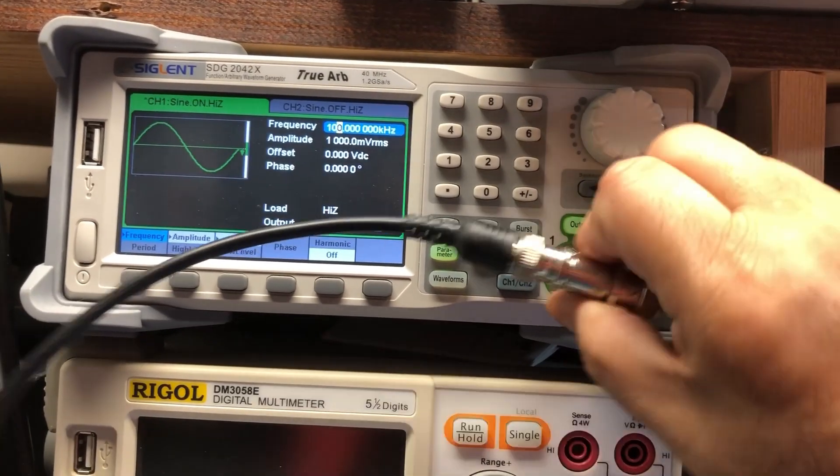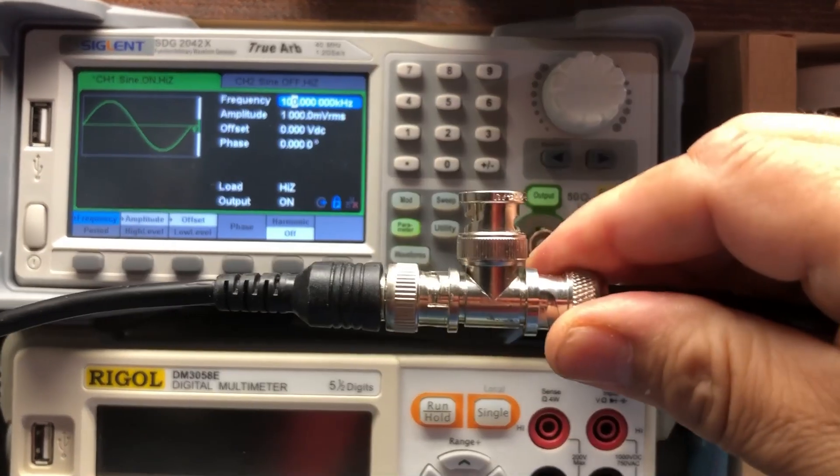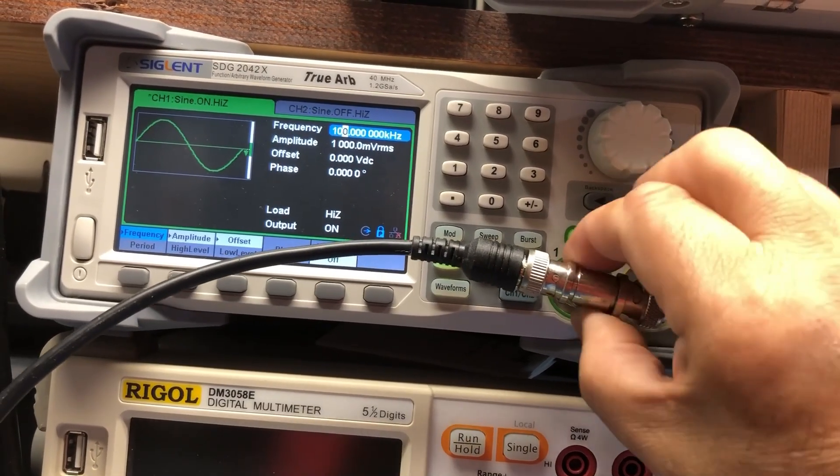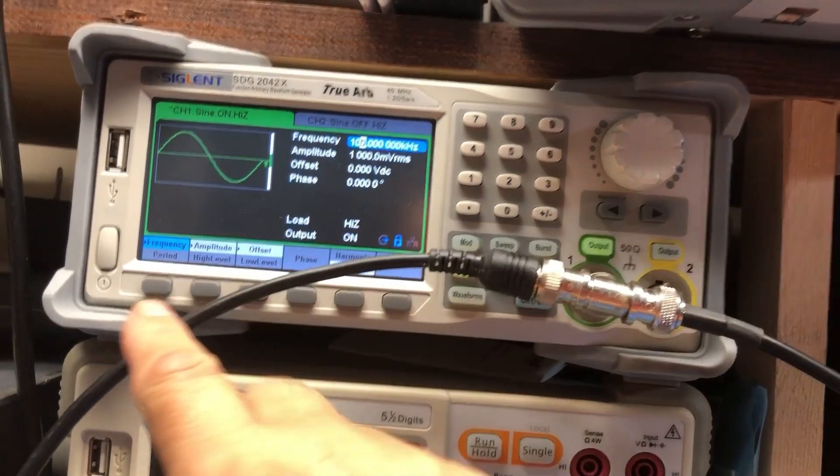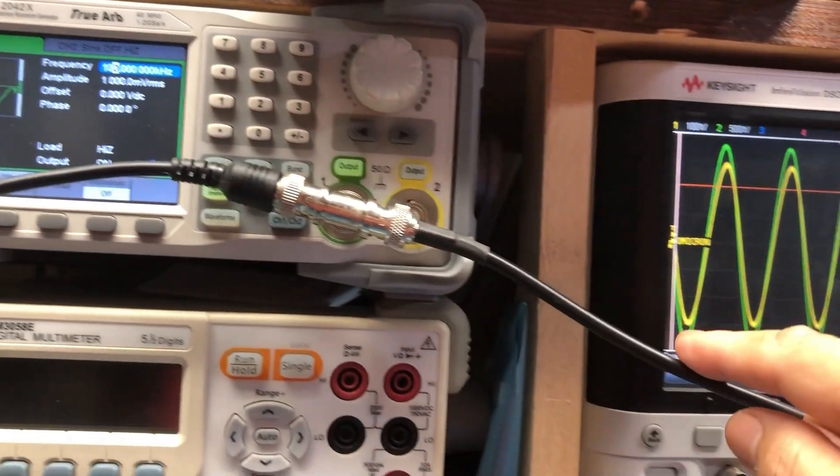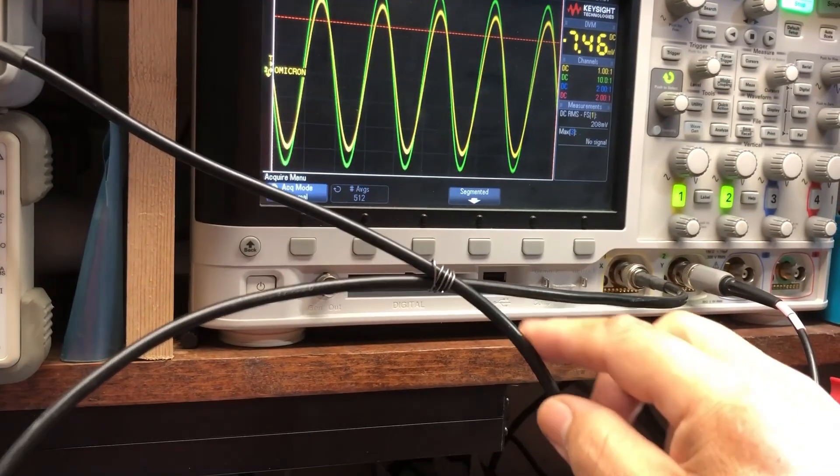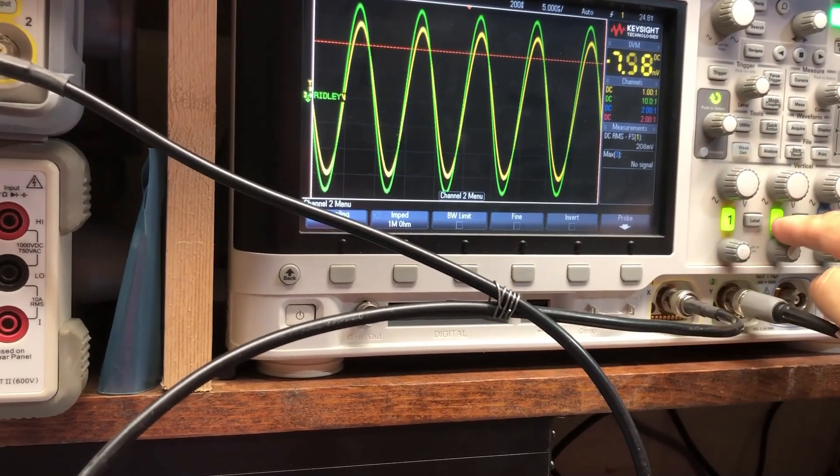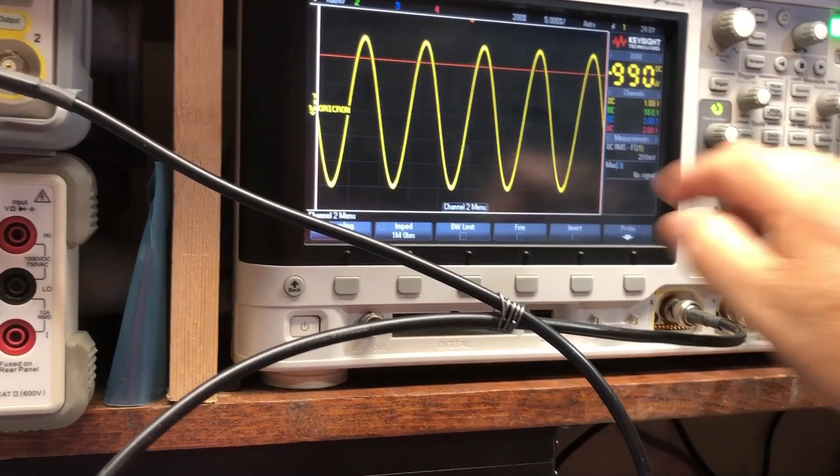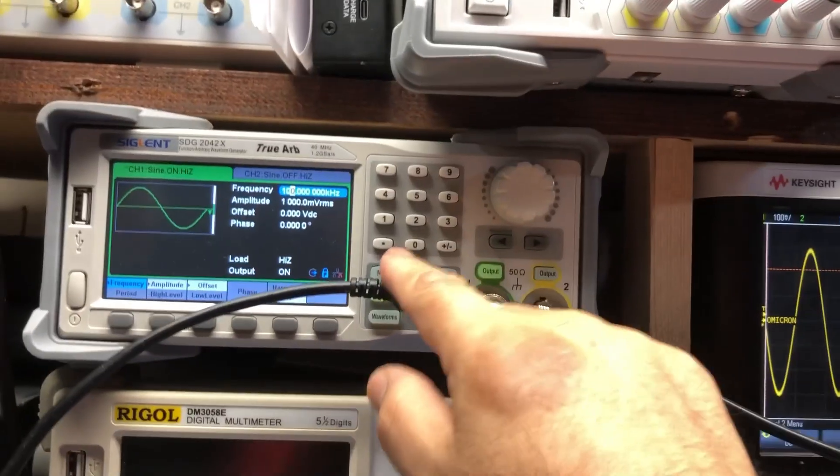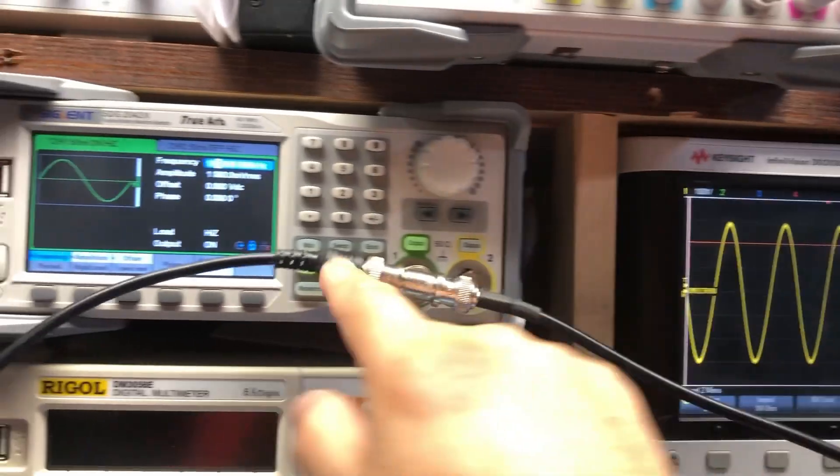You need a T because what you want to do is you want to split this output that's going to go to your transformer. Then this signal you're going to connect it to channel one. So turn off channel two, channel one. This is the output of this generator.